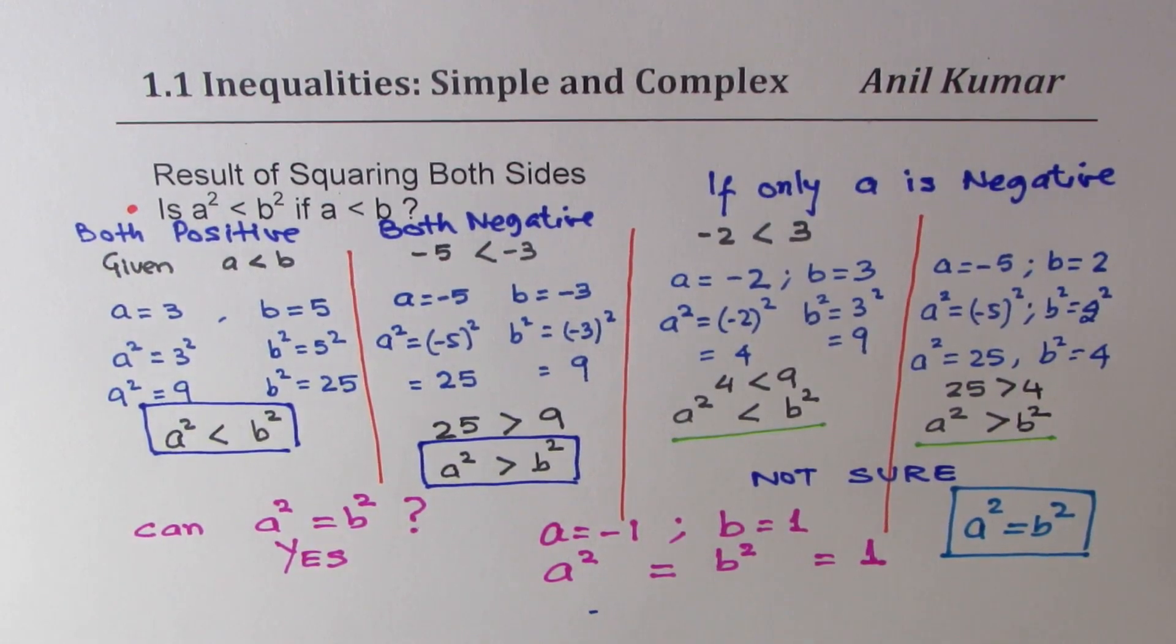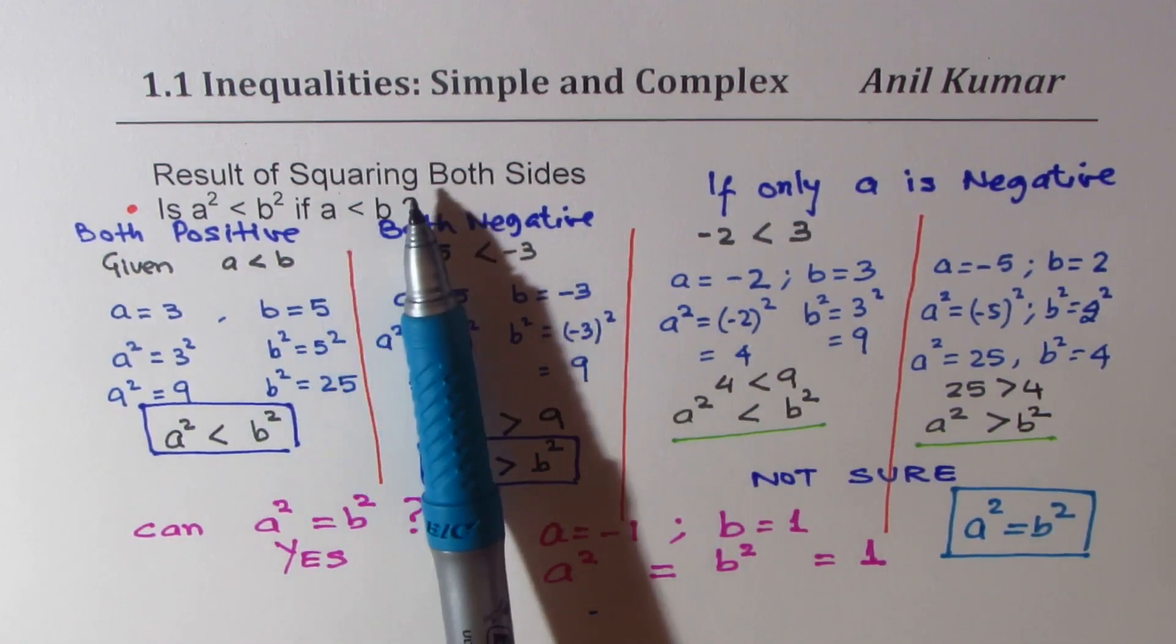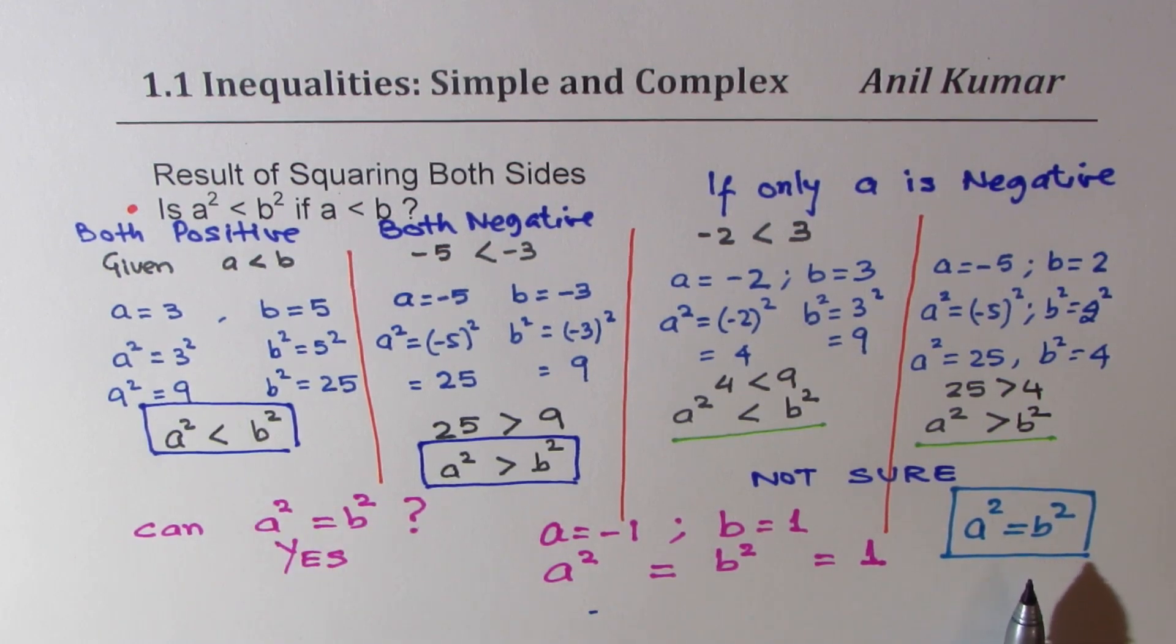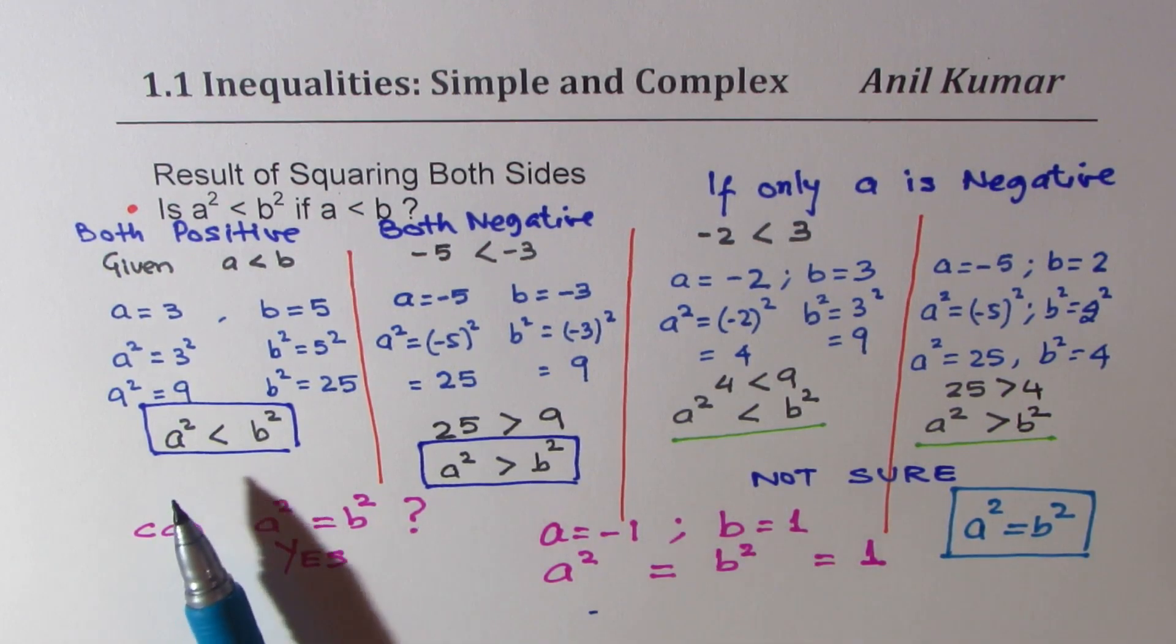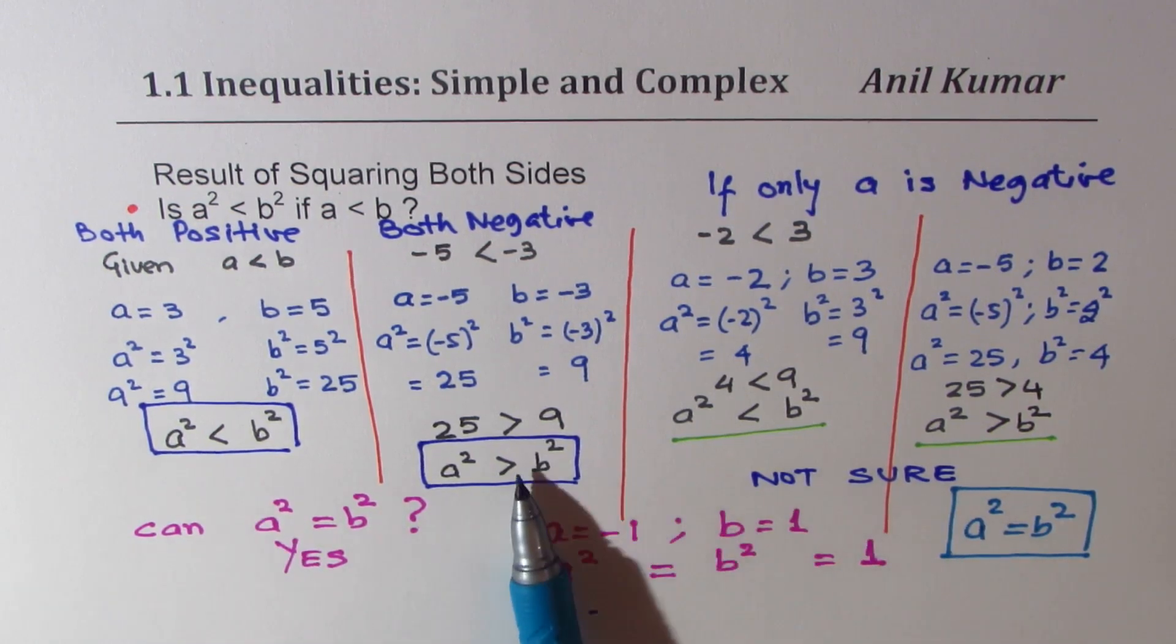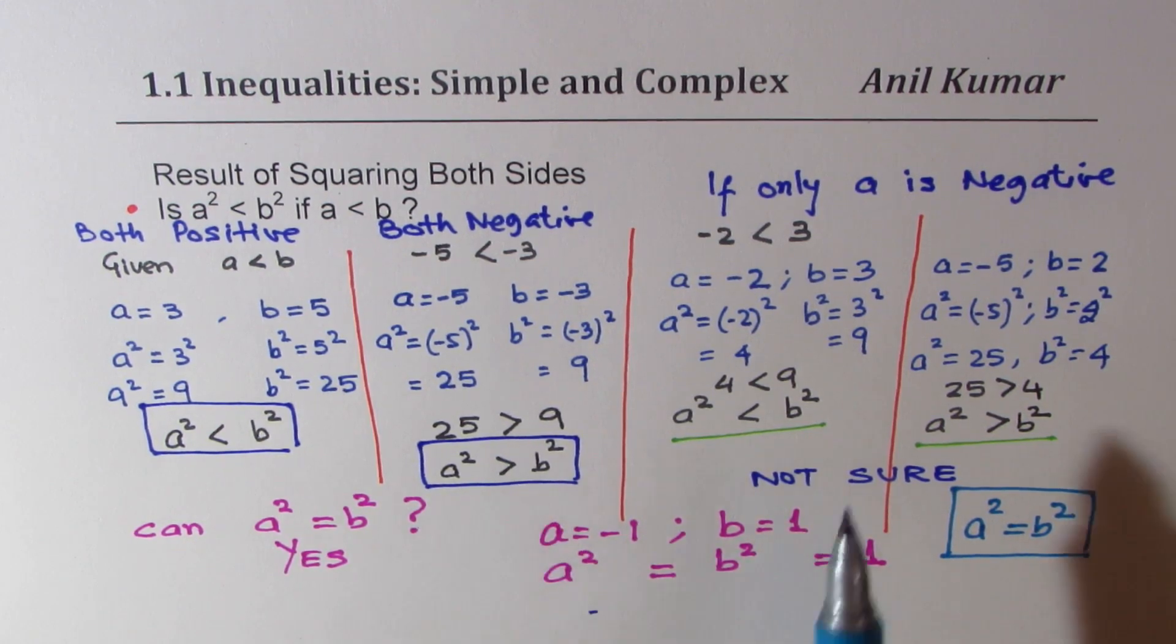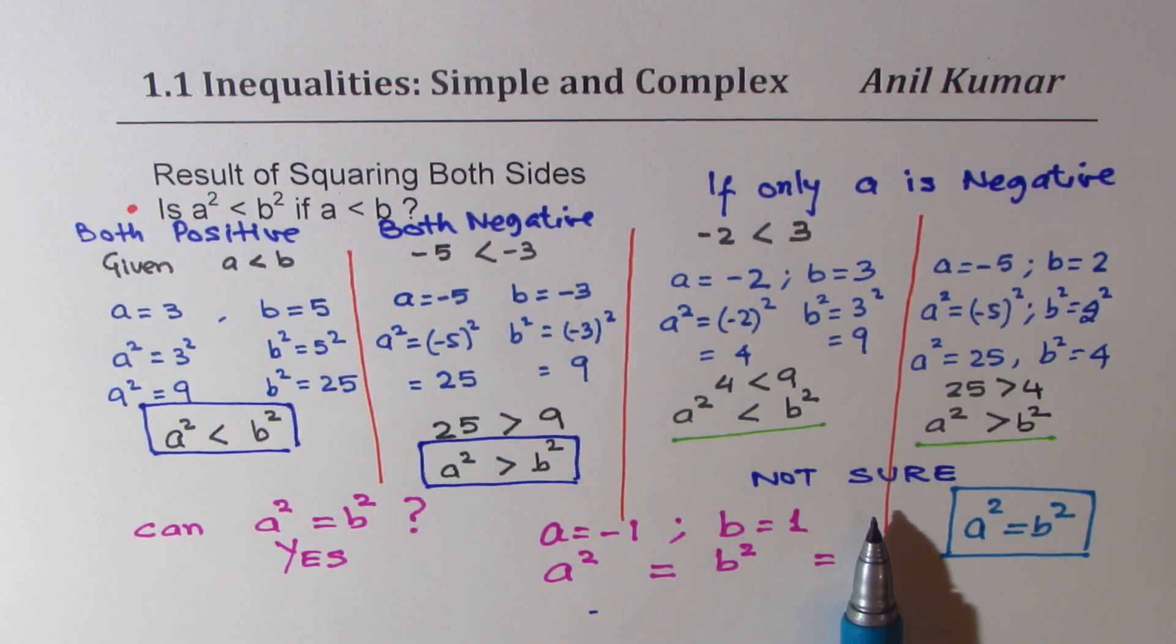So, what do you conclude from this particular video is a very important aspect. That is, when you square both sides of an inequality, then any of these things are possible. If you are sure that we are working with only positive numbers, or only negative numbers, you could predict the result. But if one of the numbers is negative, then you cannot predict the result.